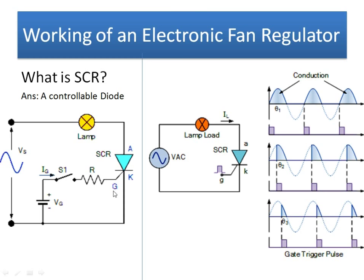There is a battery connected with a switch to the gate. We need to close this switch to make the SCR conduct. Looking at the graph: a normal diode conducts for the full positive cycle and doesn't conduct for the negative cycle, with no control over the voltage. With an SCR, we can control the output voltage — if we want current only at the peak point, we can use the SCR to achieve that.